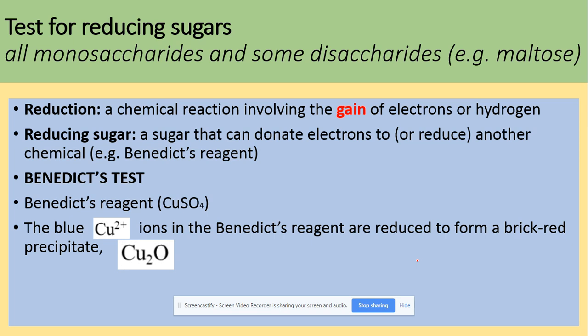All monosaccharides and some disaccharides like maltose are reducing sugars. What does that mean? Reduction — remember it's OIL RIG — so reduction is the gain of electrons or hydrogens, and reducing sugars are sugars that can donate electrons to, or reduce, another chemical. The test you're going to use for reducing sugars is Benedict's. Benedict's has copper ions which are blue, and they will be reduced to form a brick-red colour in the solution.